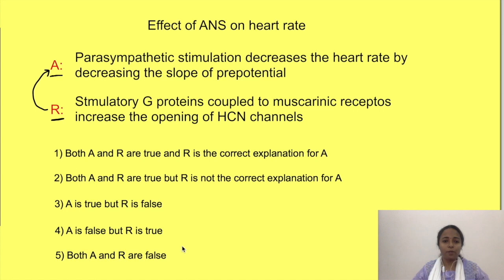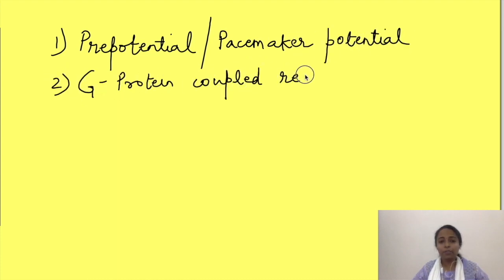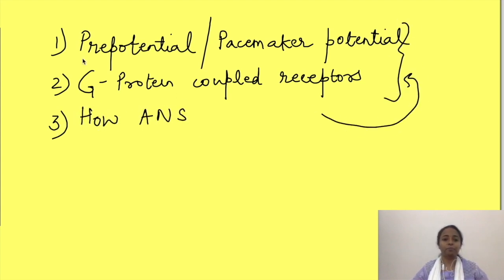Okay, so to solve the question we need to know three things. First thing is pre-potential or pacemaker potential. Then what are G protein coupled receptors and how ANS affects both the above. We will see each of them one by one.